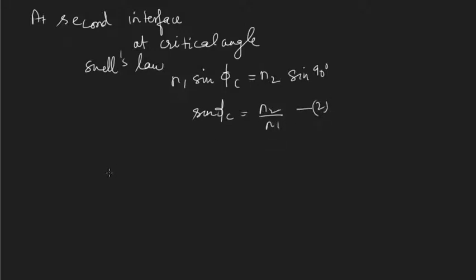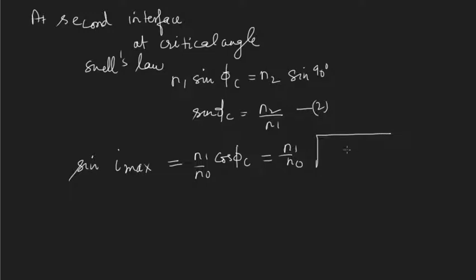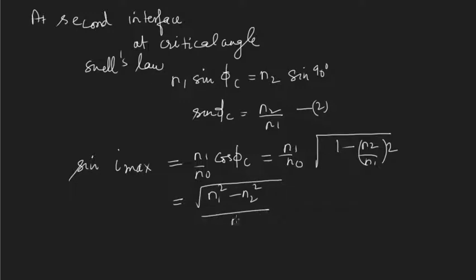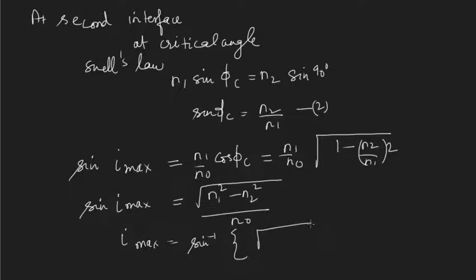From equation one, sin(i_max) = (n1/n0) cos(phi_c). Substituting the value of cos(phi_c) from equation two using the identity cos²(theta) = 1 − sin²(theta), we get sin(i_max) = (n1/n0) × sqrt(1 − (n2/n1)²), which simplifies to sin(i_max) = sqrt(n1² − n2²) / n0.